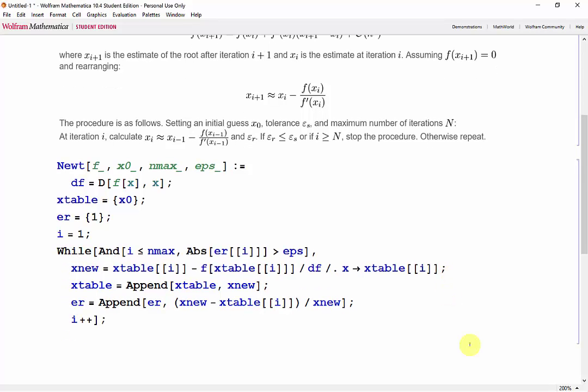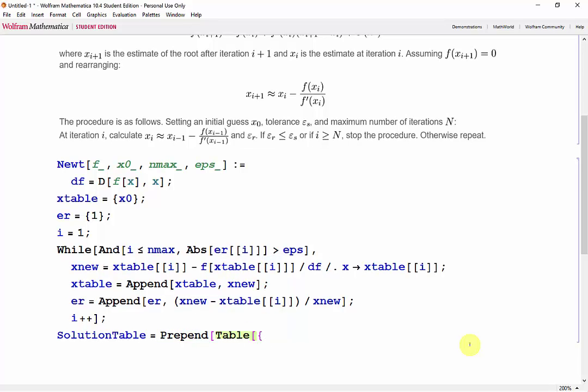Now we can set up our table using the table and prepend functions. So our solution table equals prepend the table. And we started with an initial guess x0. So our iteration number needs to start at 0. And so we need i minus 1, x table of i, error of i, and that's it. And we want i going from 1 to the length of x table.